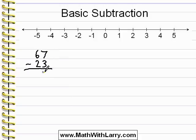So, I'll do 7 minus 3, which is 4. And I'll do 6 minus 2, which is also 4. And that's our answer, 44.